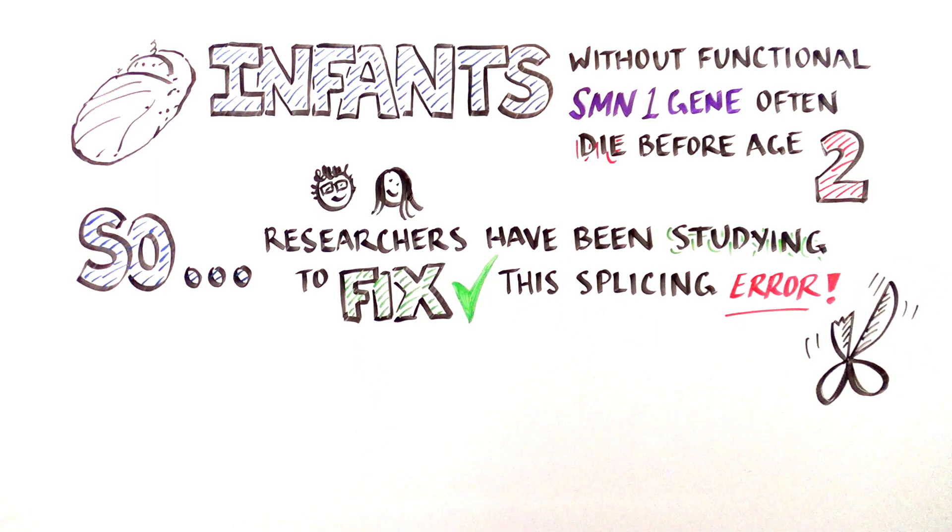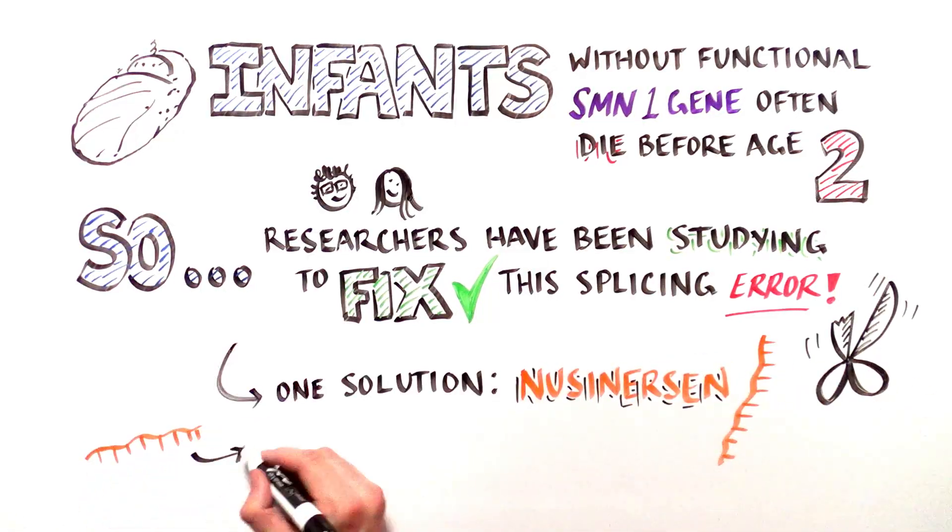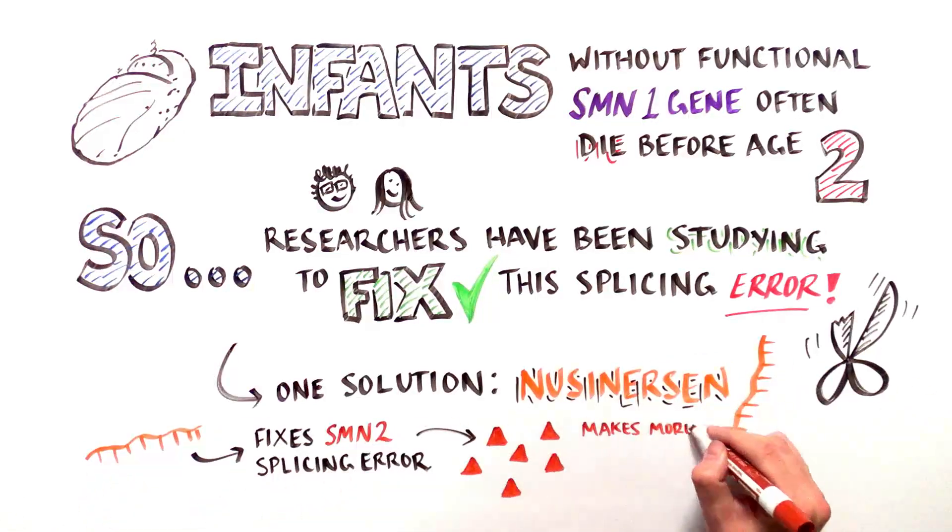One solution is called nusinersen. It enables SMA patients to make more SMN protein. But how?